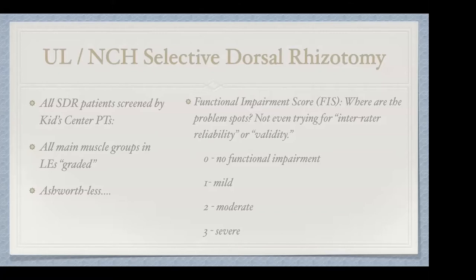So we use something called a functional impairment score. I don't know that it's better, but the physical therapists I work with seem to like it. All I'm looking for is how much is that muscle group getting in the way of the kid — zero would be no functional impairment, one is mild, two moderate, and three severe. It seems a little more straightforward.